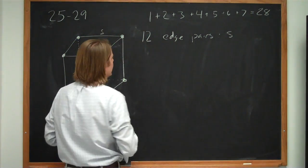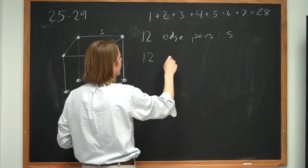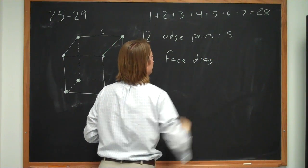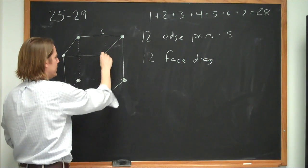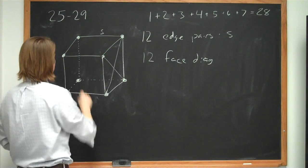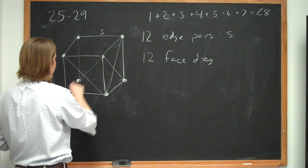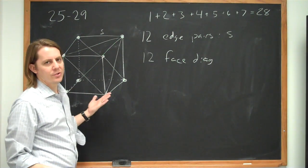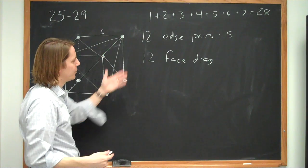And then you can also get 12 face-diagonal pairs. So if we look at the face, we can say, well, there's this pair and this pair. So that face has 2. And there's this pair and that pair. That face has 2. And there's this pair and that pair. So there's 2 per face. There's 6 faces, so there's 12.